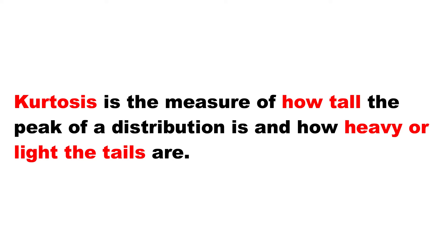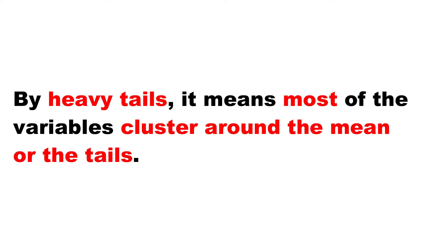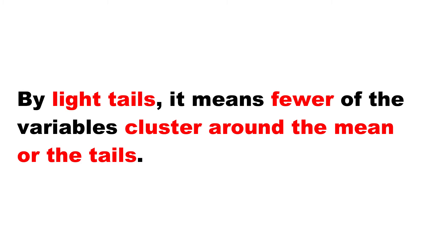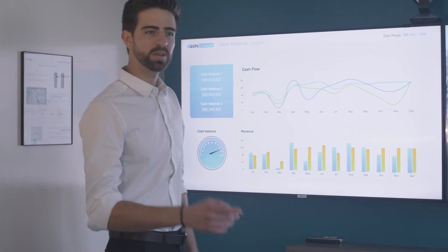Kurtosis is actually the measure of how sharp or how tall the peak of a distribution is, and how heavy or light the tail of a distribution is. By heavy or light, it simply means how variables cluster around the tail. A heavy tail implies that a lot of the variables cluster around the tail, and a light tail implies that fewer of the variables cluster around the tails. These are the details we use to define the kurtosis of a distribution.